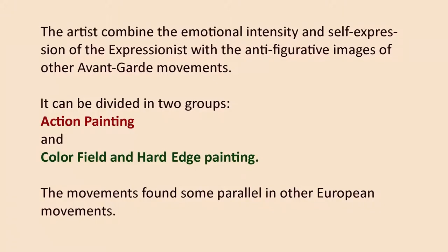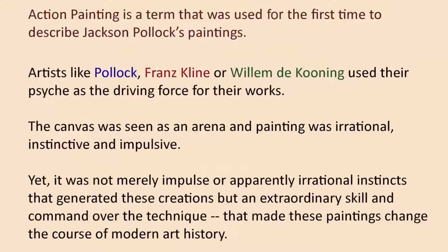Both these movements found some parallel in other European movements as well. Action painting is a term that was used for the first time to describe Jackson Pollock's paintings. Artists like Jackson Pollock, Franz Kline, or Willem de Kooning used their psyche as a driving force for their works and also used real physical movement as part of their process of painting. The canvas was designed as an arena and painting was designed as an irrational, impulsive act. Yet it was not merely impulse — it was an extraordinary skill and command over the medium that made these paintings change the course of modern art history.